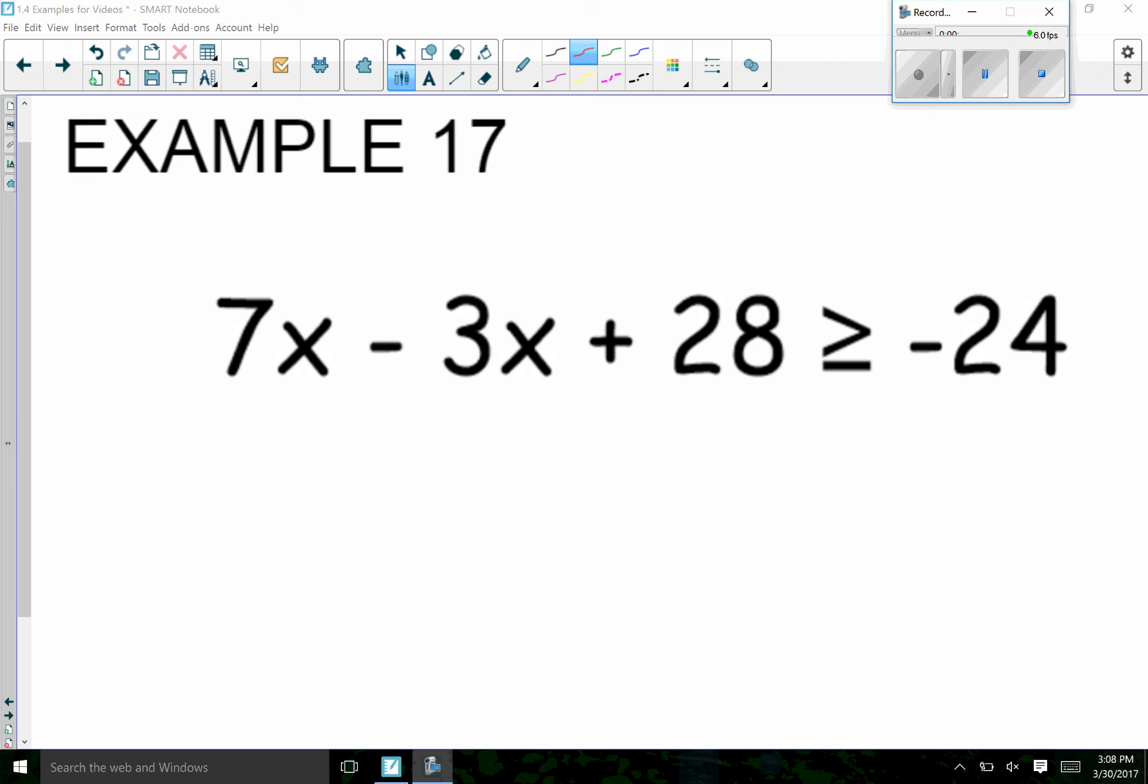Example 17 wants us to solve the inequality 7x minus 3x plus 28 is greater than or equal to negative 24.